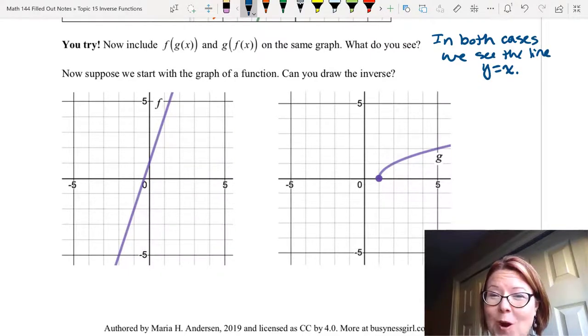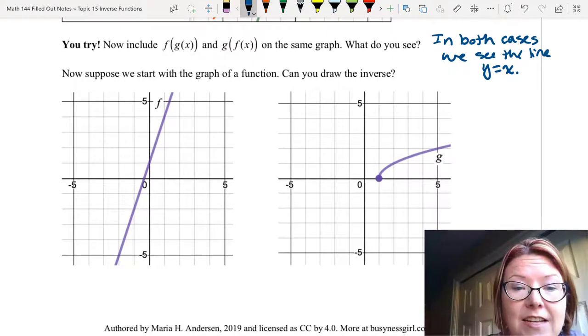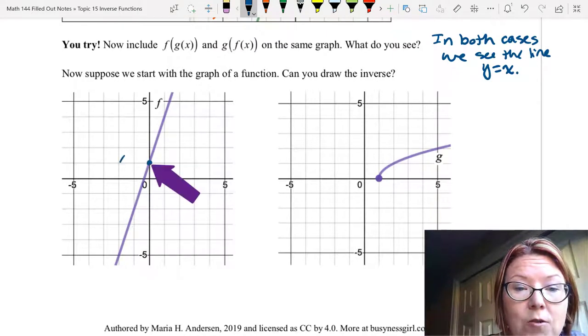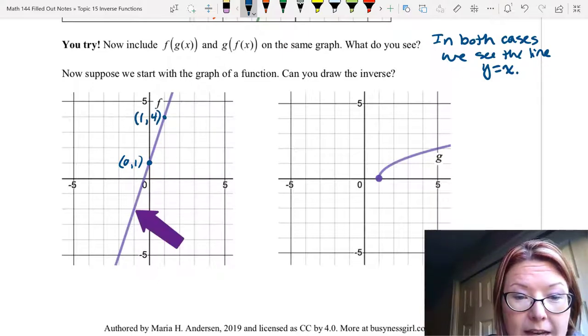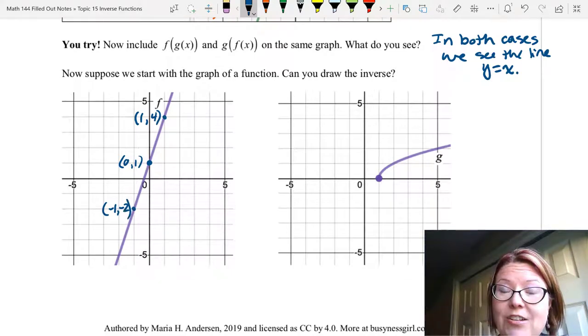Now, we can also use these properties of inverse functions to start with one graph and actually draw the inverse, even if we don't know what the function is. In this first case, we have a function f. It's a line that has a y-intercept at (0, 1). It has another point at (1, 4) and another point at (-1, -2). Let's go ahead and draw the inverse.